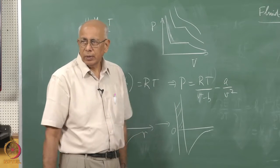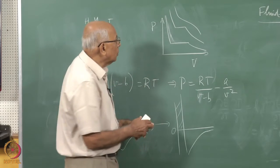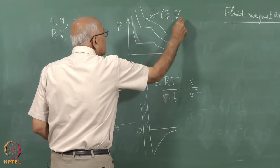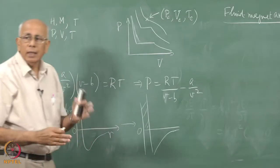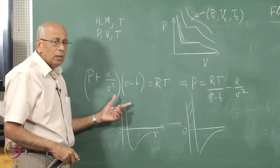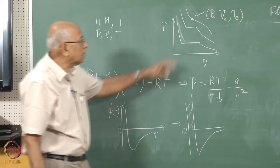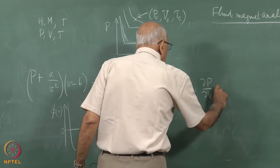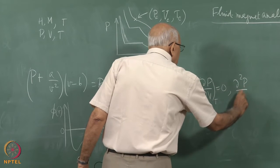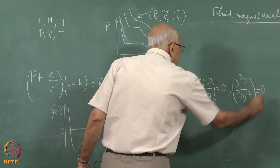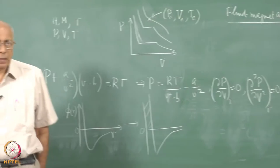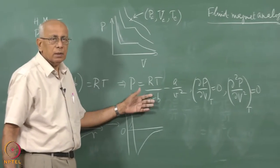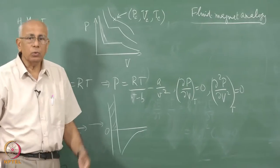This is called a mean field theory. The Van der Waals equation produces an inflection point at the critical point where (∂P/∂V) = 0 and (∂²P/∂V²) = 0 on the critical isotherm. Together with the equation of state itself, these three equations determine P_c, V_c, and T_c.